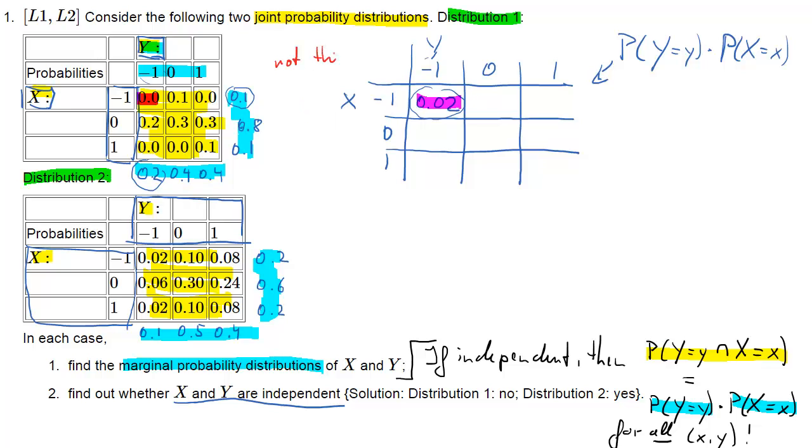...times the marginal probability of X being -1, which is 0.1, that gives 0.02. Now we can already see that these probabilities are not the same. So in a way we can already conclude that for that first distribution, X and Y are not independent, because the results should really have been the same if they were independent.